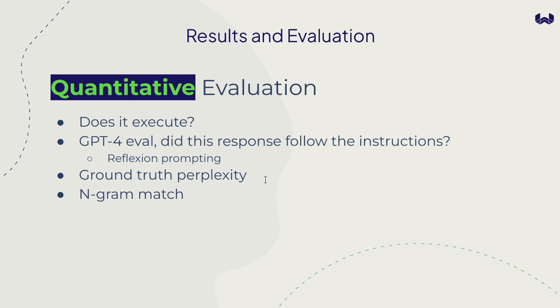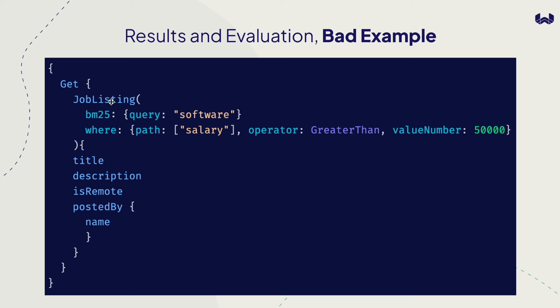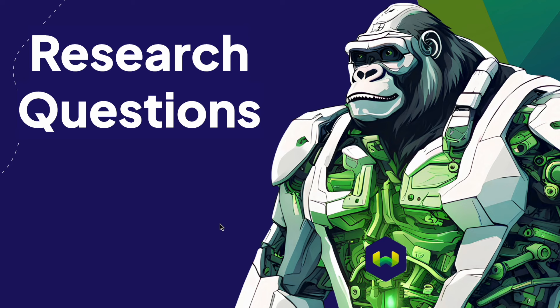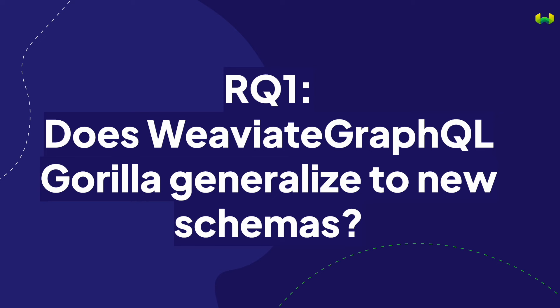A couple of more quantitative metrics: ground truth perplexity, where we force the language model to generate the ground truth queries — this is one of the most common metrics. There's also N-gram match, where for example with a BM25-where query, we see how many keywords it matches to evaluate how well it followed the particular API reference. We'll talk more about evaluation later. We're train-test splitting our synthetic schemas into 40 training and 10 testing, and thinking about controlling variance in schema properties for more coverage.